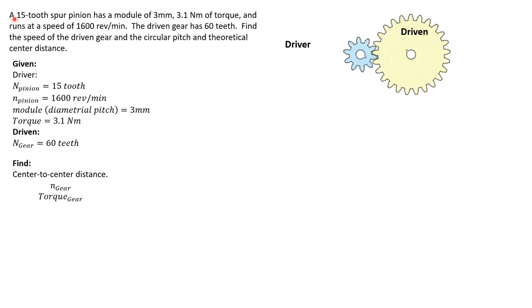You have a 15-tooth spur pinion in metric. It has a module of 3 millimeters, and module is just the same as diametral pitch—the teeth per millimeter—so 3 millimeters per tooth. It has a torque of 3.1 Newton meters.